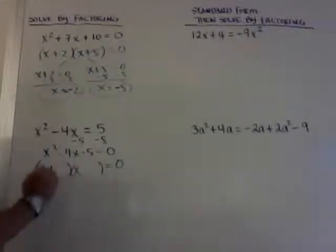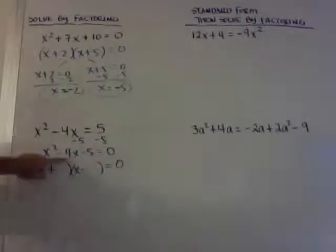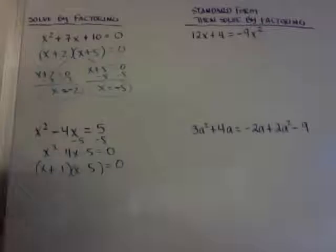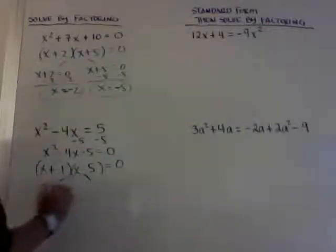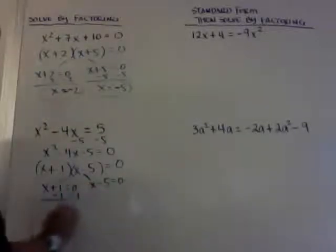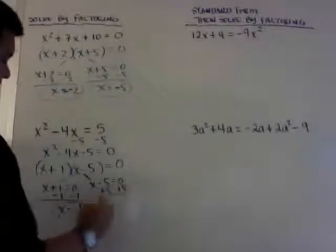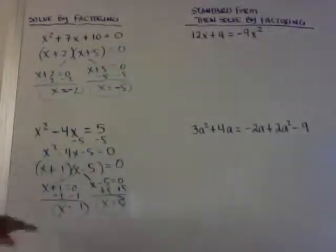And I know it's going to be a plus and a minus since it's a negative 5. And I want the minus to be bigger. So it's minus 5 plus 1 because I want a negative 4 sum. Split this, x + 1 = 0, x - 5 = 0. Minus 1 from both, so x is equal to negative 1. Plus 5 to both sides, x is equal to 5. So there's your two answers, negative 1 or 5.